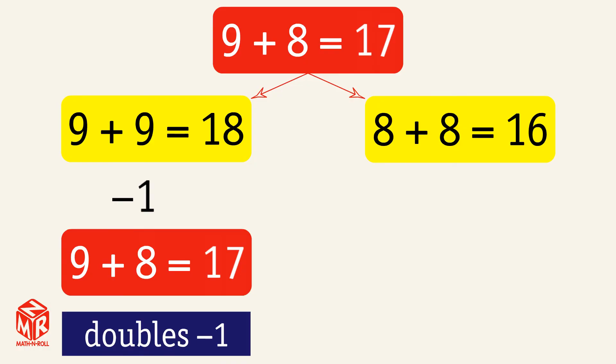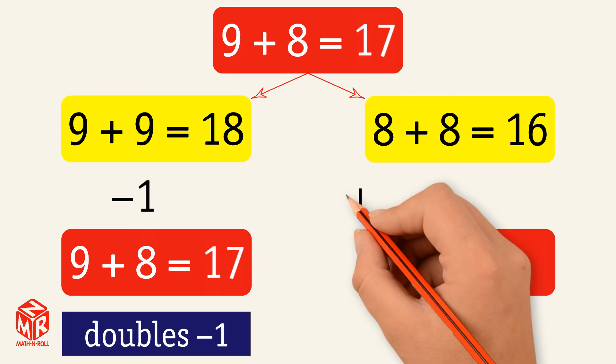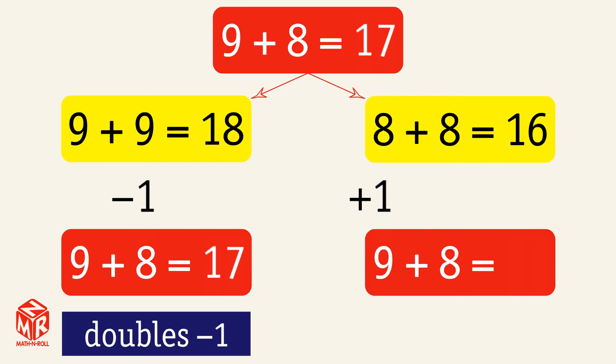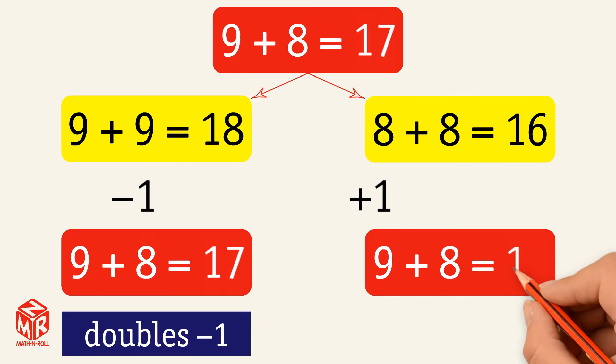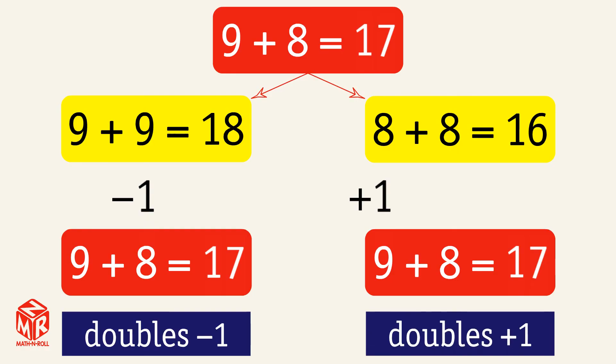Now let's use the doubles fact 8 plus 8. We need 9 plus 8, so we add 1 to our doubles fact. 16 plus 1 equals 17. So 9 plus 8 equals 17. This is the doubles plus 1 strategy.